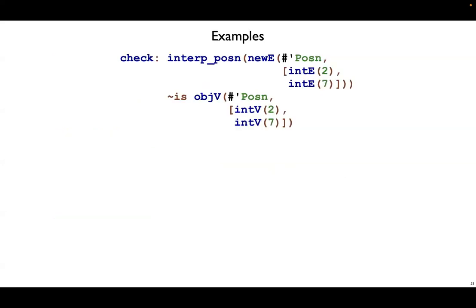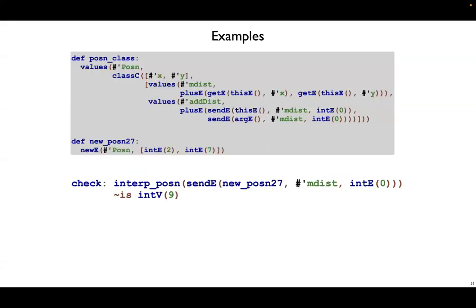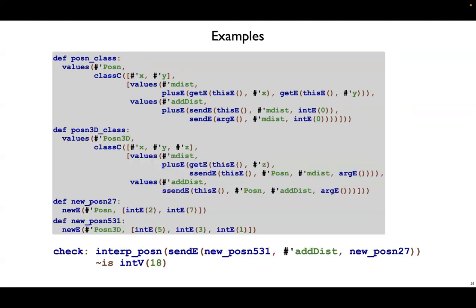When we interp_posn on a new expression, that creates a posn with the fields two and seven. We should get back an object v with the symbol posn and the fields two seven. Let's wrap that code in a def so we can use it later. When we interpret a method call mdist on our new posn two seven, we should get back the sum of two plus seven.